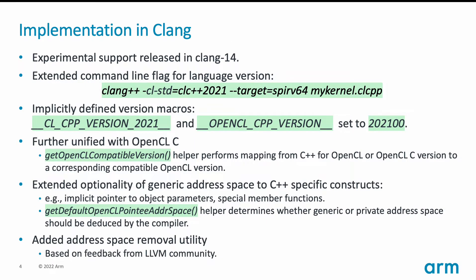Let's look at the implementation in Clang a little bit. The experimental support for this new language version was released in Clang 14. Here is an example of how Clang can be used to compile with it: we need to set CL_CPP 2021 in the CLSTD flag, and the rest is pretty standard.